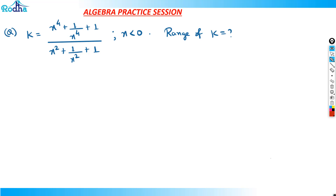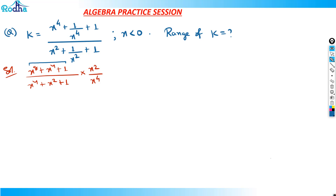Let's solve it. We'll try to factorize or simplify a bit. I'll write x⁸ + x⁴ + 1 upon x⁴ + x² + 1, and this will be multiplied by x² upon x⁴. Now if you further simplify it — what I'm trying to do is get this numerator in a form where the denominator and some part of the numerator gets cancelled. I can further factorize since we're dealing with higher powers, and finding the range with higher powers could be difficult, so let's simplify.